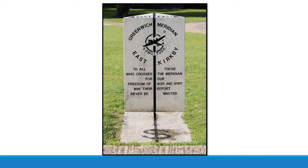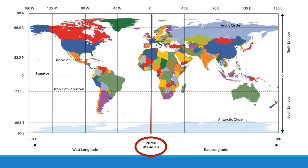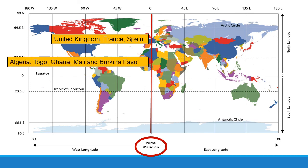The prime meridian is also called the Greenwich Meridian because it passes through Greenwich, England. In the northern hemisphere, the prime meridian passes through the UK, France, and Spain in Europe, and Algeria, Togo, Ghana, Mali, and Burkina Faso in Africa. The only landmass crossed by the meridian in the southern hemisphere is Antarctica.